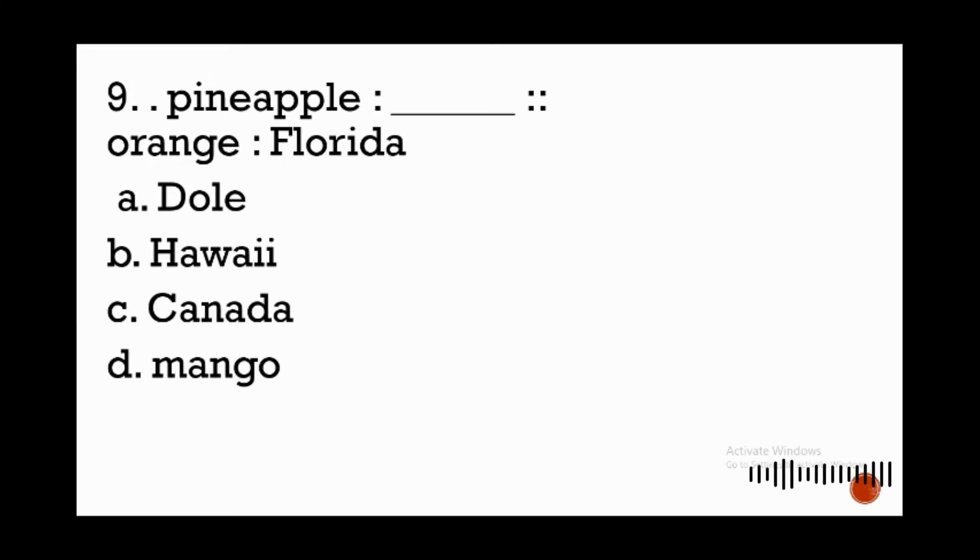Now apply the same relationship with the other pair of words. Pineapple is to blank. Pineapples are grown in which state? Therefore choices letter A and D are obviously wrong, so you may eliminate those choices. So choices left are letter B, Hawaii, and C, Canada. Is Canada known for growing pineapples?